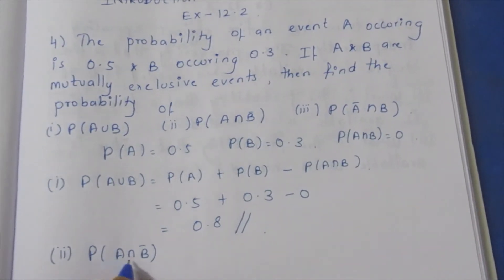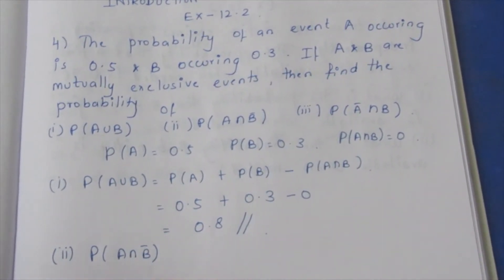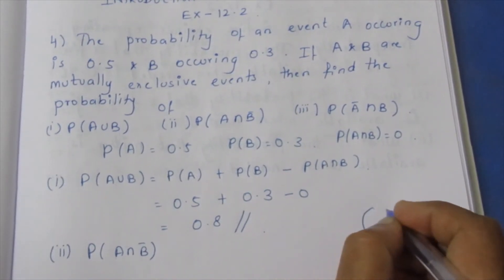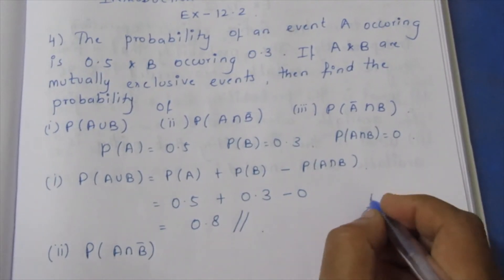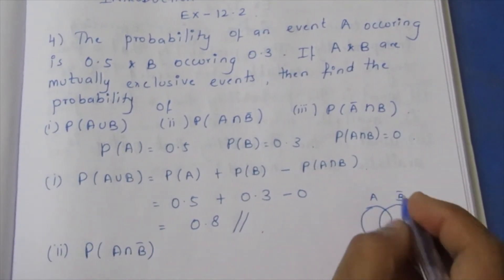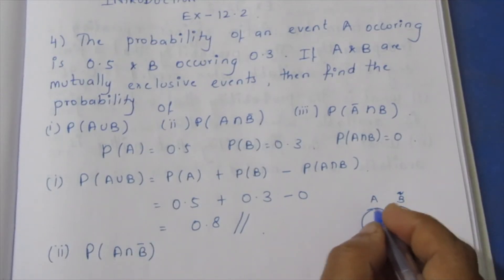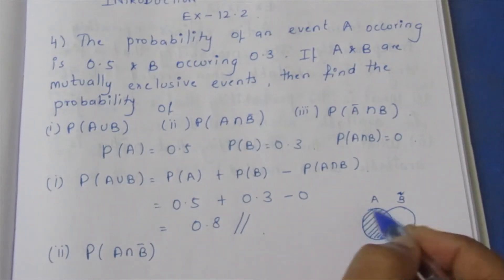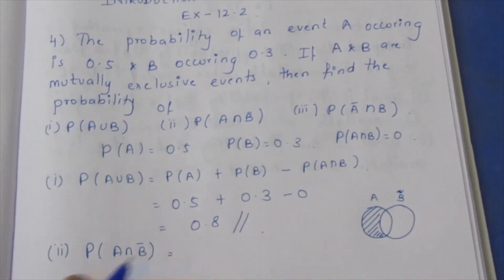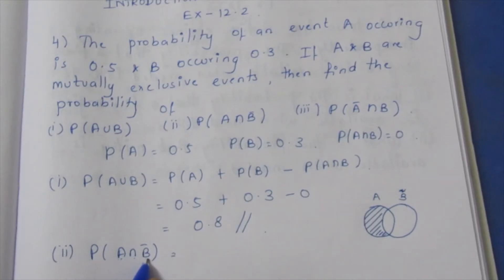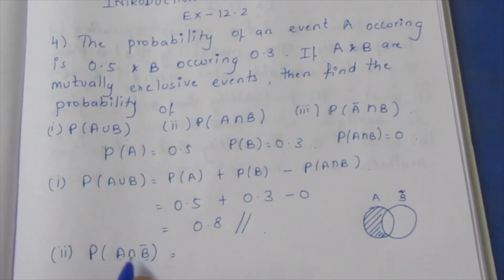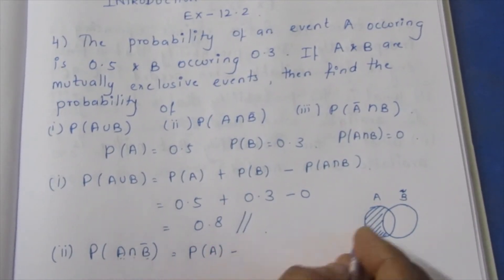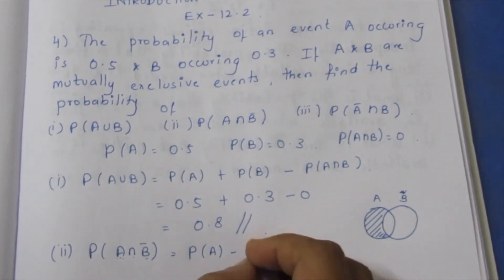Second subdivision: P of A intersection B'. A intersection B'.